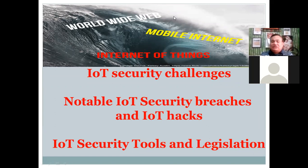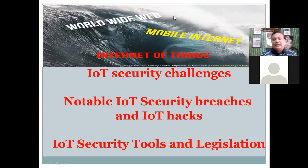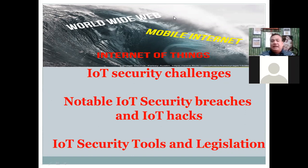Mirai, one of the largest IoT botnets to date, first attacked journalist Brian Krebs' website and French web host OVH in September 2016. The attacks clocked in at 630 gigabits per second and 1.1 terabits per second, respectively. In the following month, DNS service provider Dyn's network was targeted, making websites including Amazon, Netflix, Twitter, and The New York Times unavailable for an hour. The attacks infiltrated the network through consumer IoT devices, including IP cameras and routers. A number of Mirai variants have since emerged, including Satori, Hide and Seek, Masuta, Pure Masuta, Wicked Botnet, and Okiru, among others.